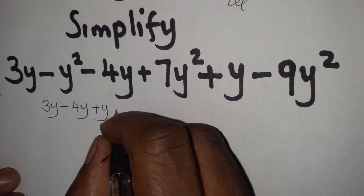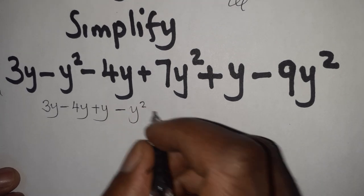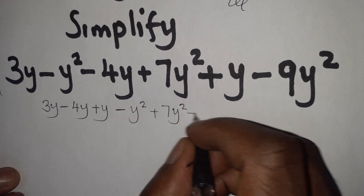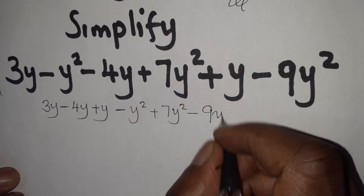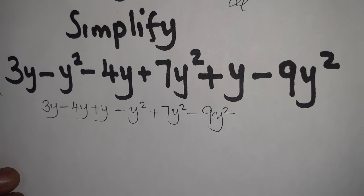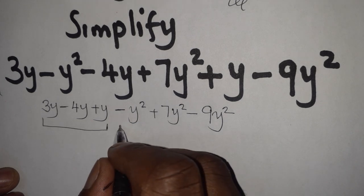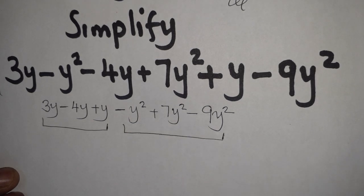And then we also have minus y squared plus 7y squared minus 9y squared. Okay. Okay, so when you look at these, these are like terms as well as these are like terms.